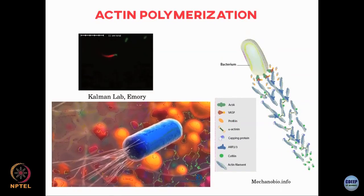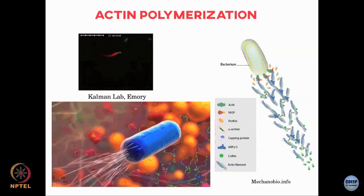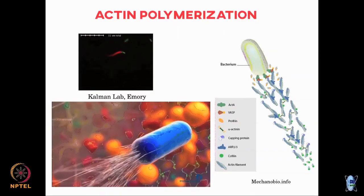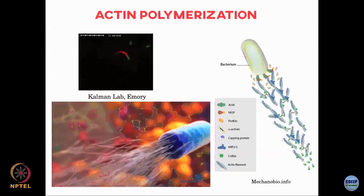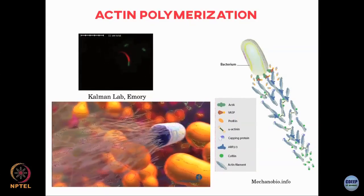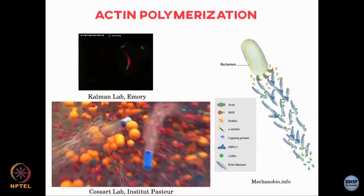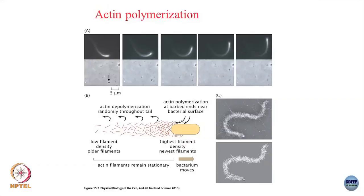Subunits being added provide a force that propels the bacteria forward. Looking at the actin filaments, there is a high density of filaments near the bacteria and a lower density of longer-lived filaments as you move further away from the bacteria.